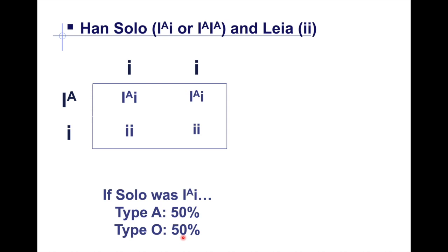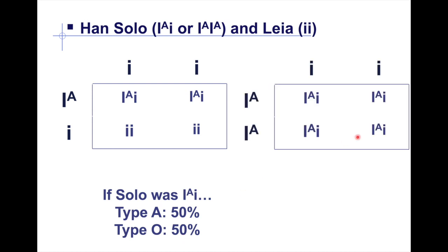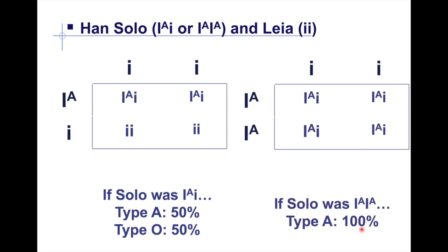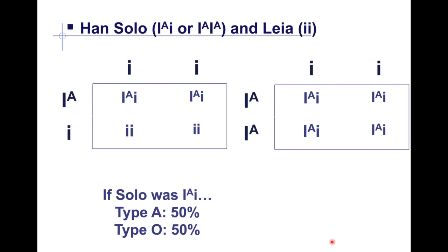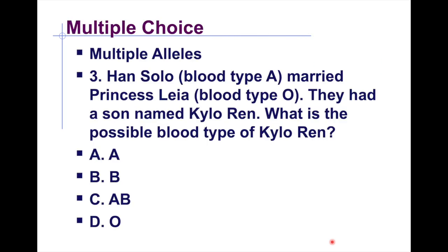For the second possibility, if Han Solo has genotype IAIA crossed with Leia ii, all offspring would be blood type A despite carrying alleles for blood type O — 100% type A. So going back to the question, there are two possible answers: letter A (blood type A) and letter D (blood type O), depending on Han Solo's genotype.